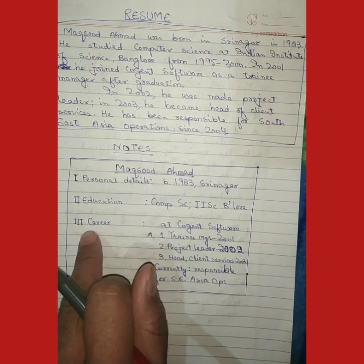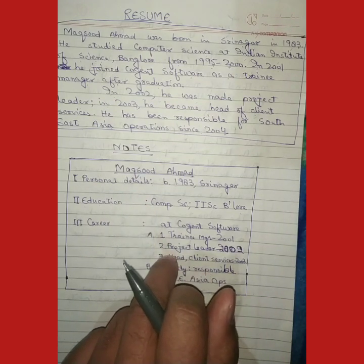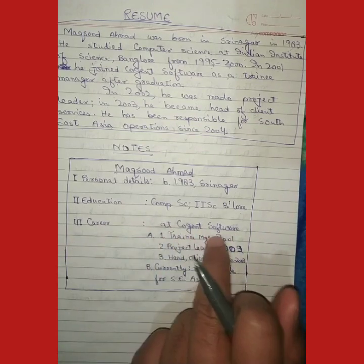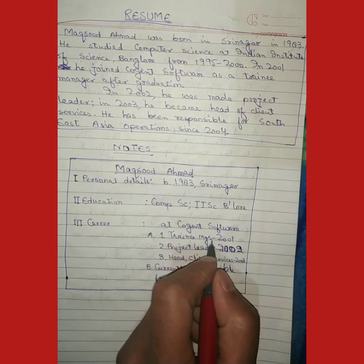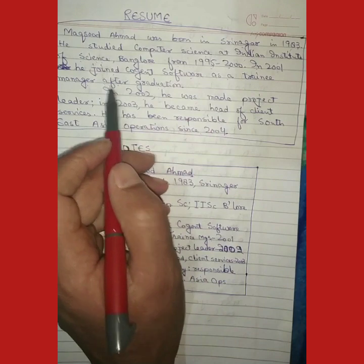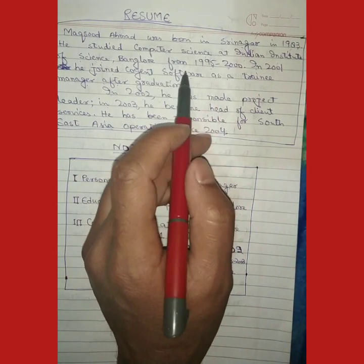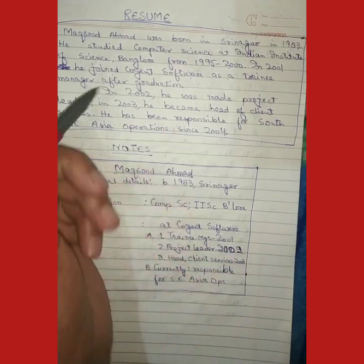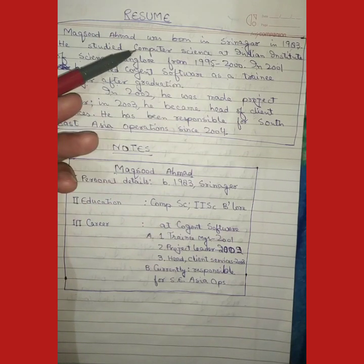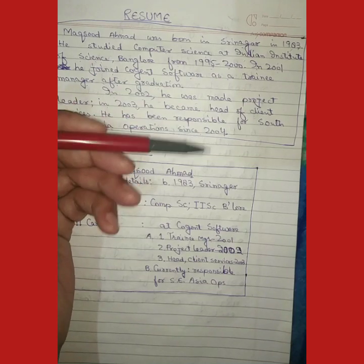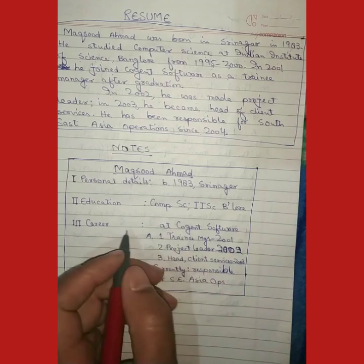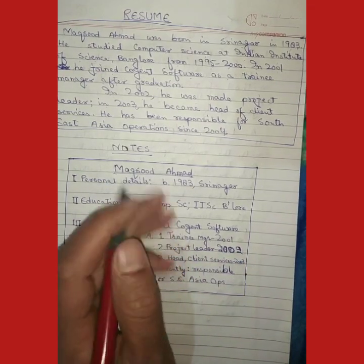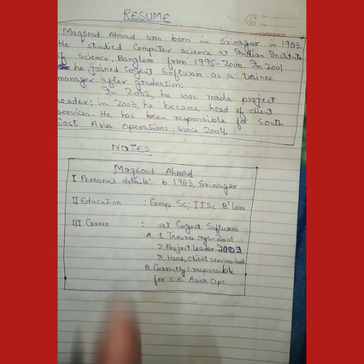The third step is career. After leaving the Indian Institute of Science Bangalore, he went to Cogent Software. We write 'career at Cogent Software' using a colon. The colons should all be aligned in a line so the notes don't look haphazard — they should look straight and attractive.